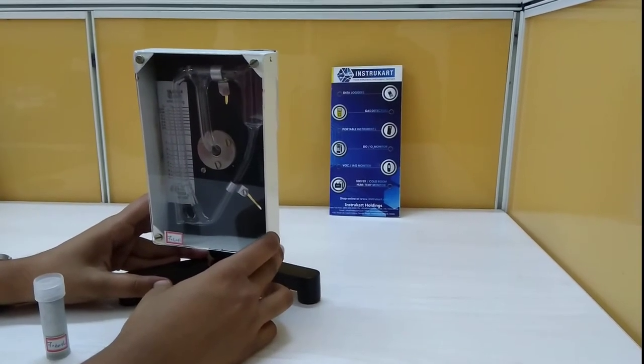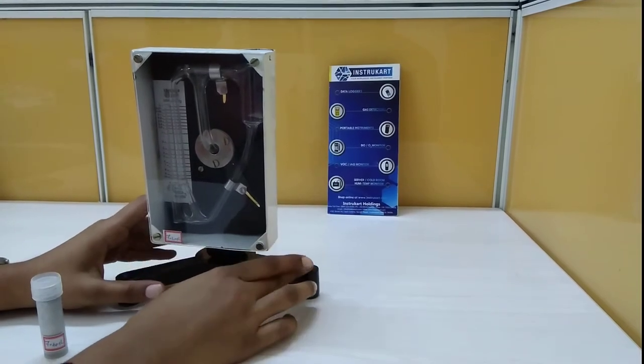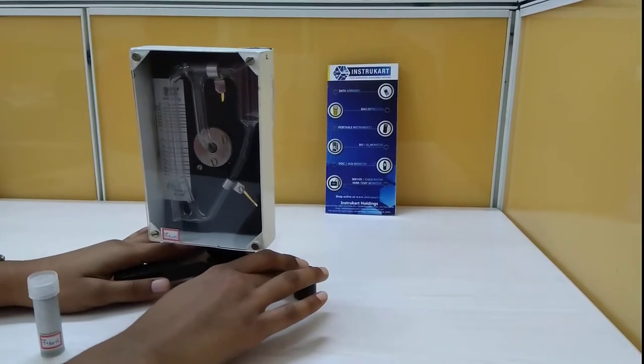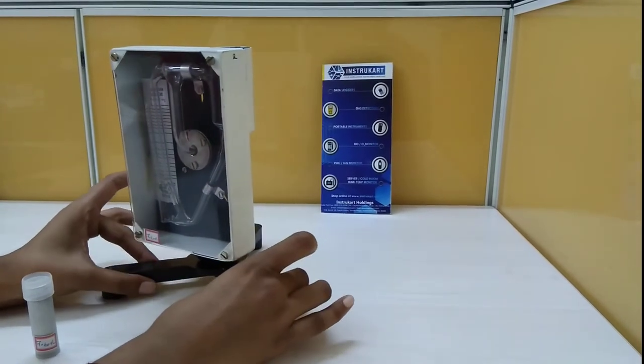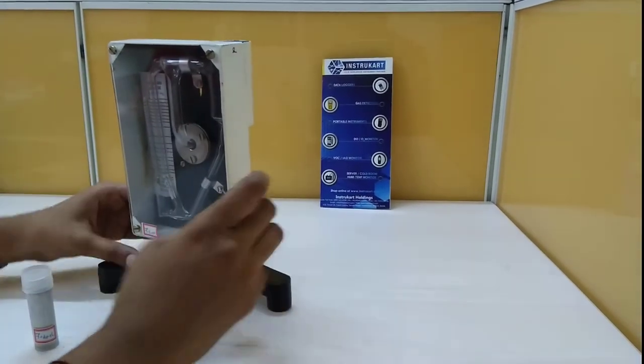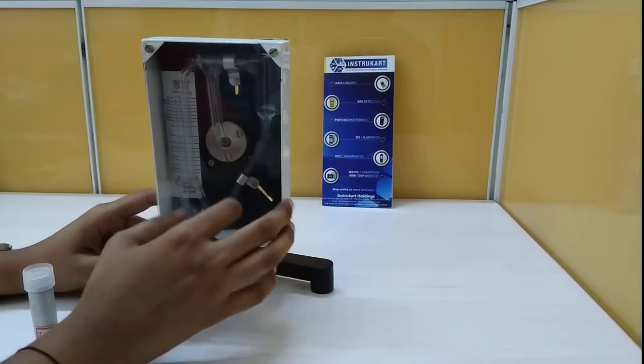This McLeod gauge comes with a range of 10 to 0.01 mm Hg and an optional range of 1 to 0.001 mm Hg. It is provided with a tripod stand and a glass for protecting the tube.